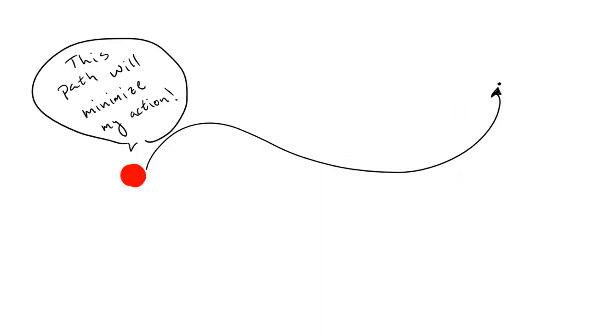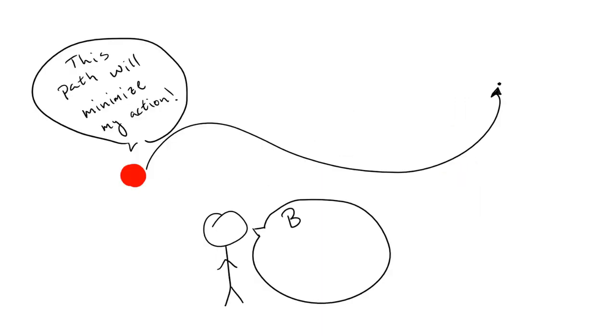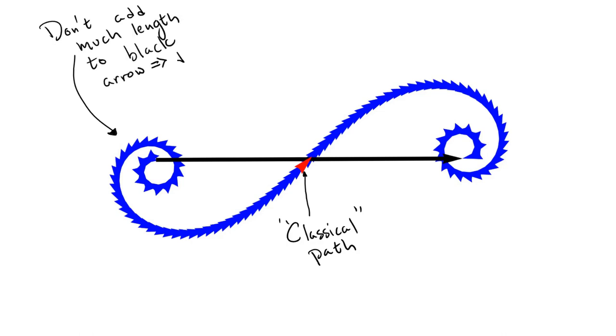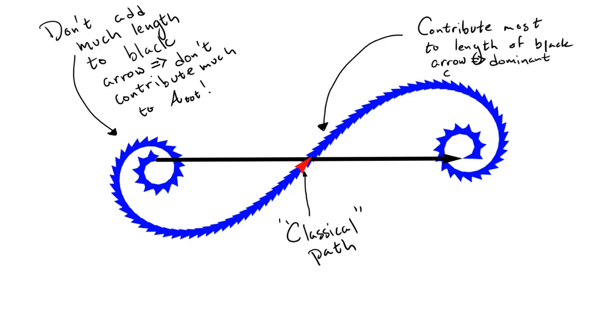With this in mind, let's remember our goal. We want to see how classical systems know to take the path that minimizes the action. In this case, the path that minimizes the action is just the red path of least distance. So, we begin to see the answer to our question. When the stopwatch hands swirl around each other like they do for paths far from the red path, they don't really contribute to the total amplitude, since they don't add much length to the final arrow that we draw. On the other hand, the paths close to the red path all add up since they're pointed in roughly the same direction, which gives the dominant contribution to the amplitude.